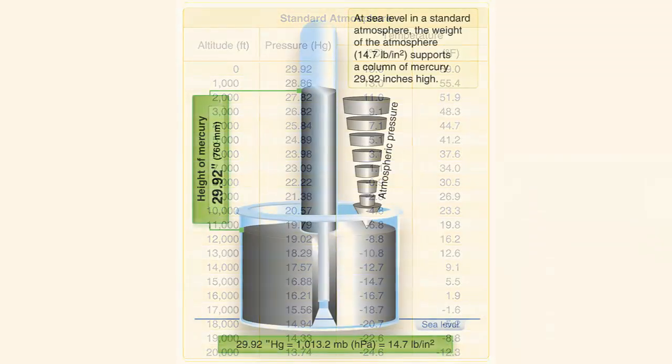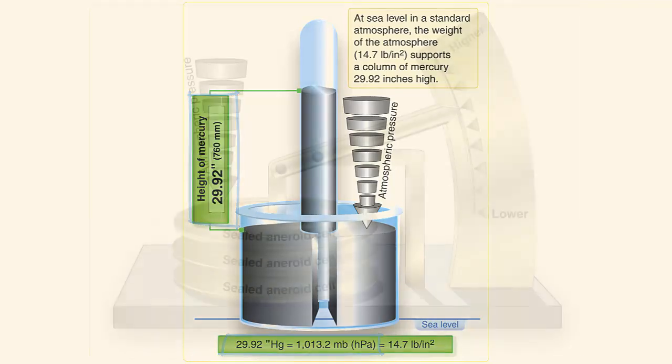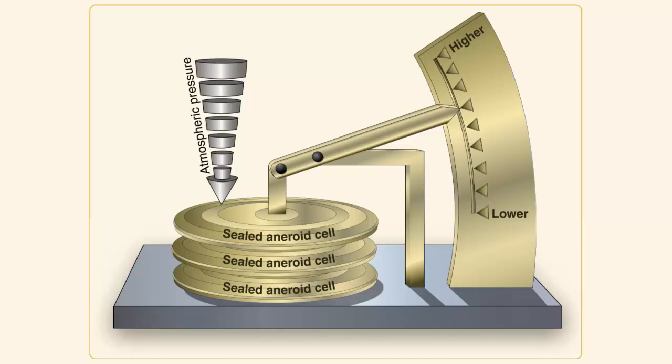Pressure altitude is the height above a standard datum plane, which for pilots is a theoretical level where the weight of the atmosphere is 29.92 inches of mercury, or 1013.2 millibars as measured by a barometer. An altimeter is a highly sensitive barometer calibrated to indicate altitude in standard atmospheric conditions. If the altimeter is set for 29.92 inches, the altimeter will display the pressure altitude.